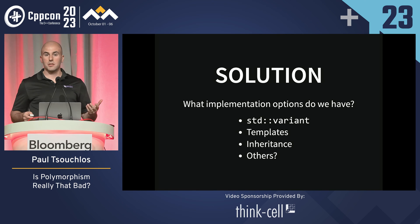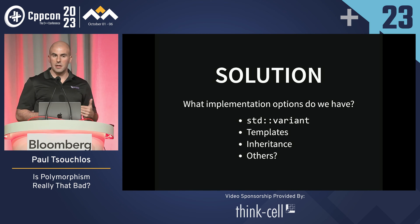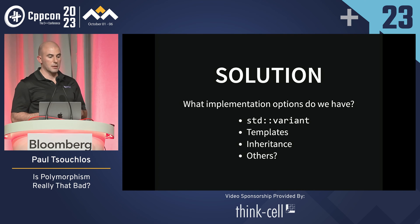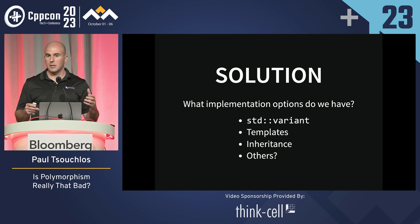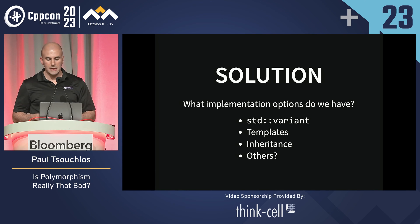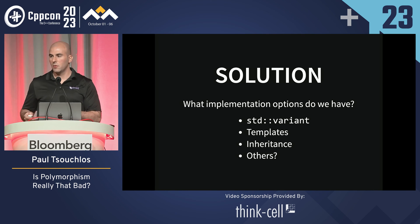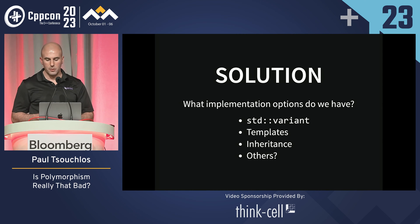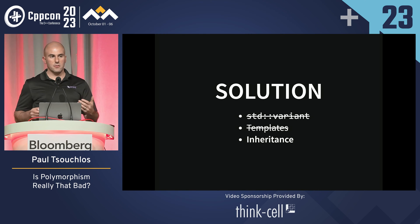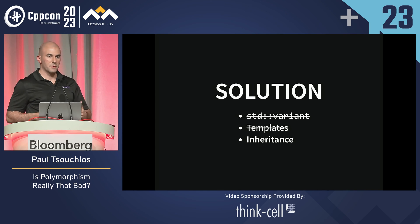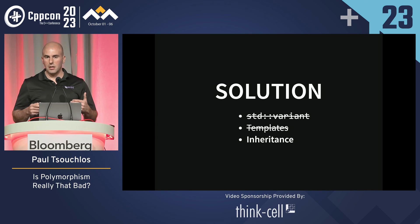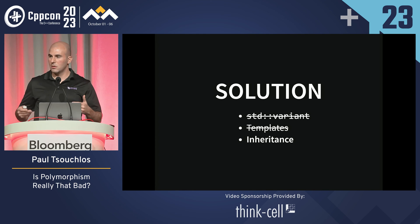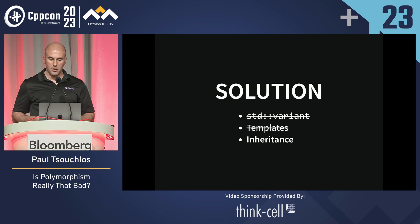For the implementation options, we were looking at std::variant, templates, and inheritance. std::variant was viable, but it was going to involve a lot of bloat and boilerplate to get it to work the way we wanted. Templates are good but they don't really play well with Qt, which is our UI platform, and we wanted to leverage that as much as we could. So we settled on inheritance. It gets a bad rap because polymorphism does have overhead, but we're not doing real-time trading, so we thought we could get good enough performance for our use case.